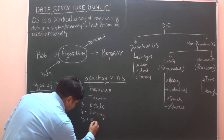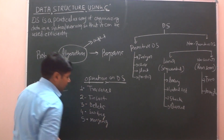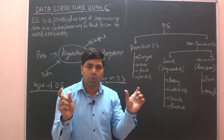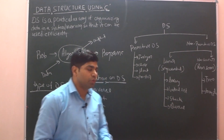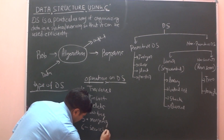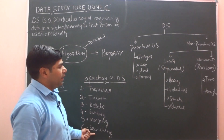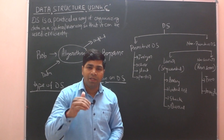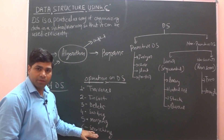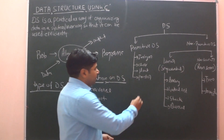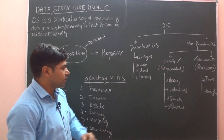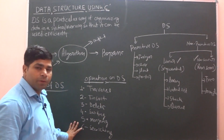Next is merging. In case of array, suppose two lists are given — now we have to combine those two lists into a single list. That is called merging. Next is searching. The meaning of searching is: in any data structure, whatever elements are stored, searching for a particular element among them is called searching. All these operations are to be performed on all data structures — whether linear or non-linear.